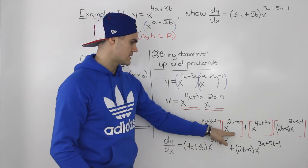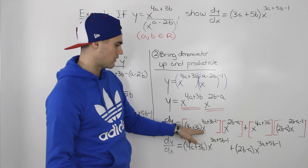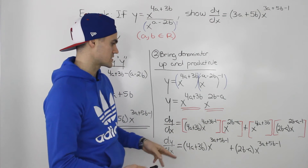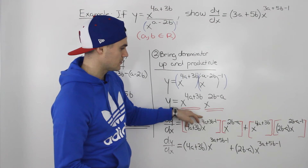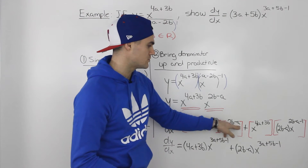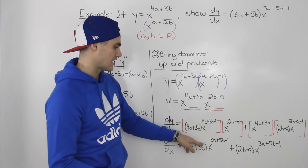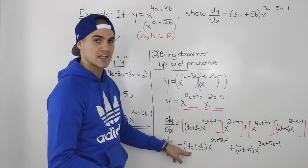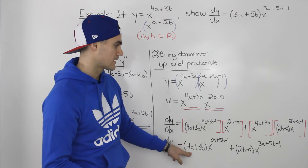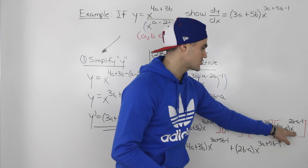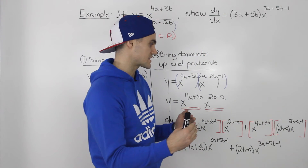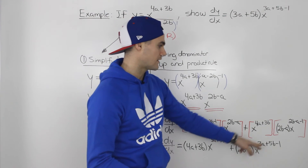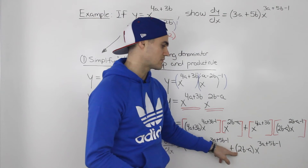In the first multiplication expression, we're multiplying two powers with the same base, so we add the exponents. Taking 4a plus 3b minus 1 and adding 2b minus a, we get x to the power of 3a plus 5b minus 1, with 4a plus 3b staying in brackets out front. In the second expression, same thing — multiplying same-base exponents — we get x to the power of 3a plus 5b minus 1, with 2b minus a kept in front.